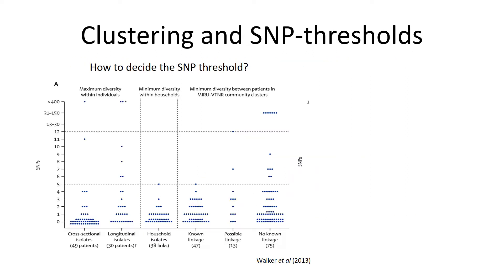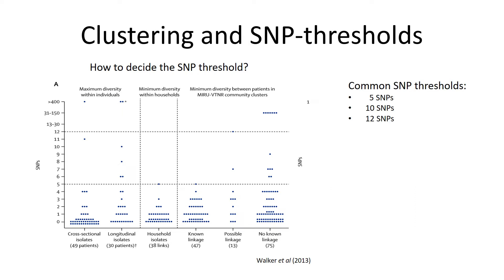So why do we use the thresholds we use today? The way this was calculated used a very simple approach: we analyze genomes of strains infecting patients that we know are linked — because of an epidemiological link from a contact study, because they come from the same household, or even because those are strains coming from the same patient. We take different samples from the same patient, sequence the strains, and observe the SNP distance between those samples. It was found that most cases known to be linked were at most 12 SNPs apart.